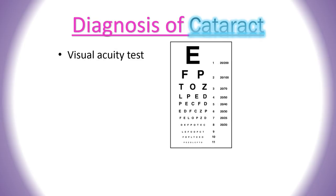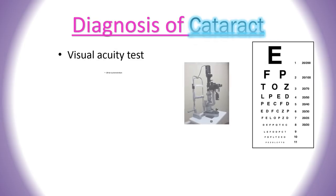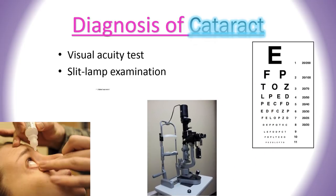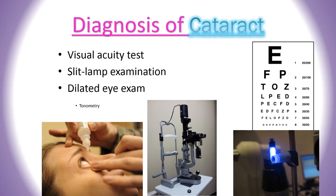Cataract can be detected through a complete eye exam that includes the following. First, a simple vision test such as the visual acuity test. Slit lamp examination is used to see the anterior structures of the eye under magnification. Then, the dilated eye exam is performed, in which drops are placed in the eyes to dilate the pupils, allowing the eye care professional to examine the retina and optic nerve. Lastly, tonometry is performed to measure the pressure inside the eye.